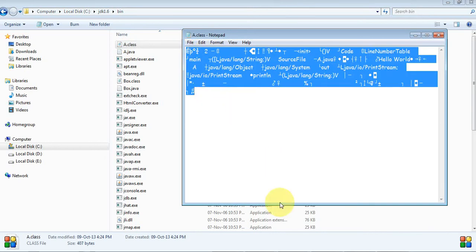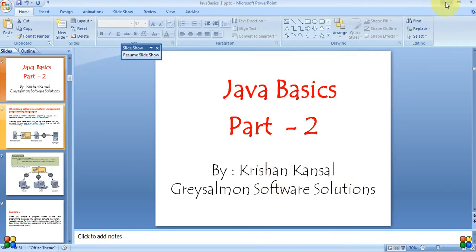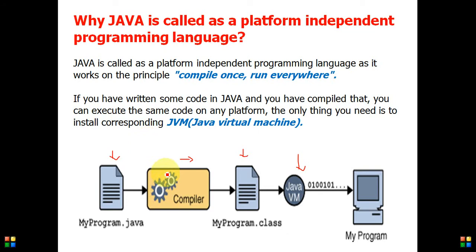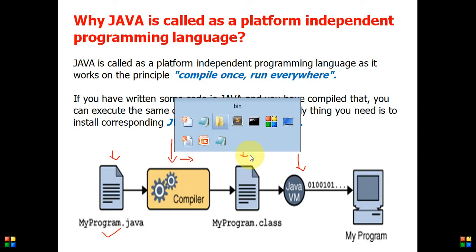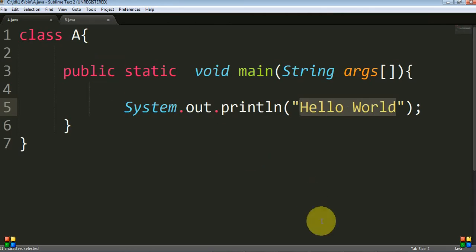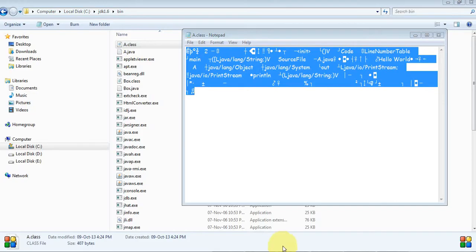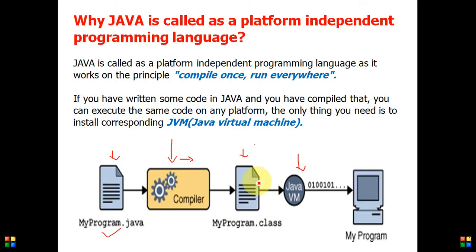This class file contains bytecode. Bytecode is a platform independent code. When we execute this code, we compile the program with 'javac', the class file is generated. In our case the program was 'a.java', and after compilation 'a.class' is generated. This is the source file 'a.java' and this is 'a.class'. If you want to view 'a.class', you can open it — it shows the bytecode.